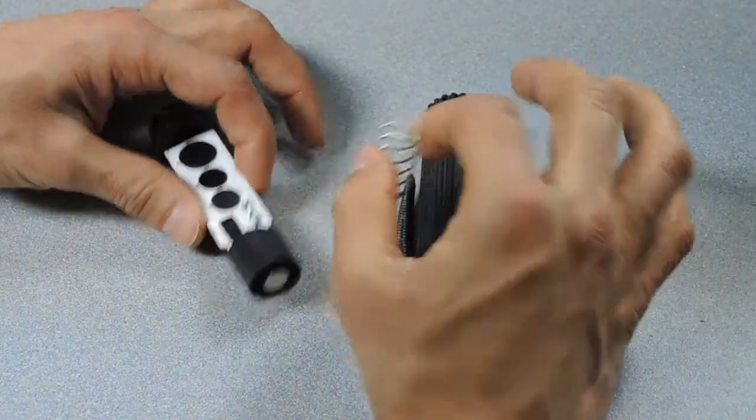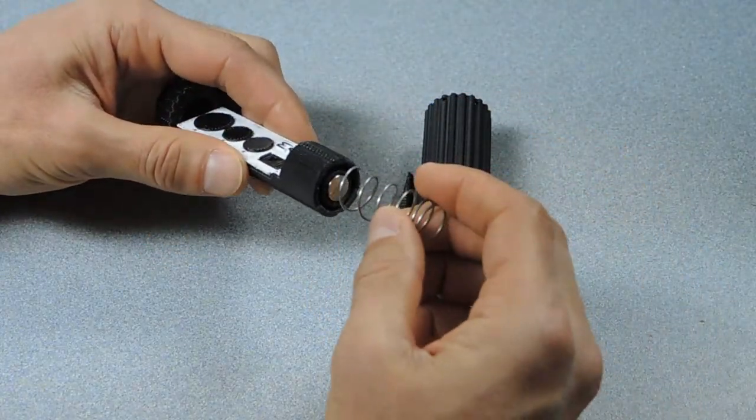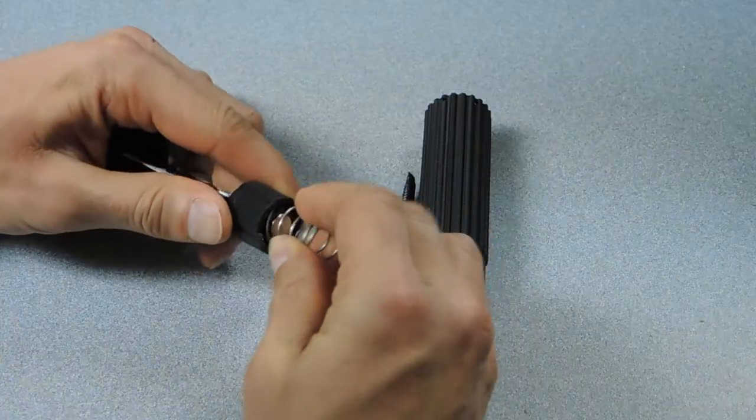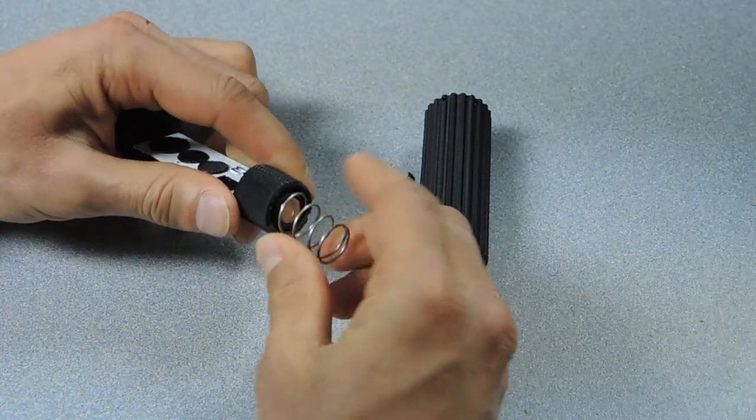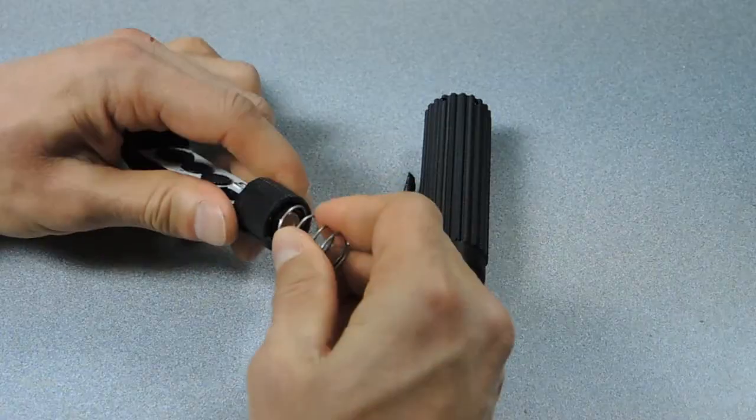One of the final steps is installing the spring. So I've already cut the spring down from its original size having about five turns remaining and you'll need a pair of heavy-duty wire cutters to do this.